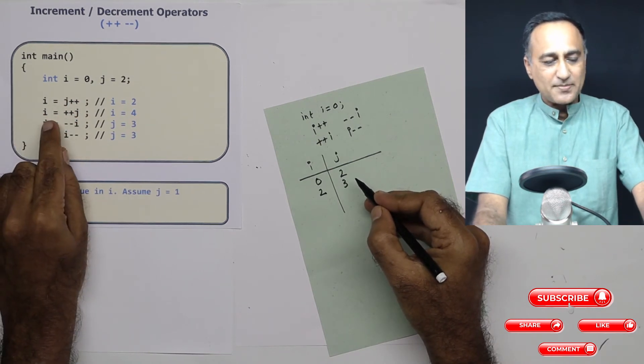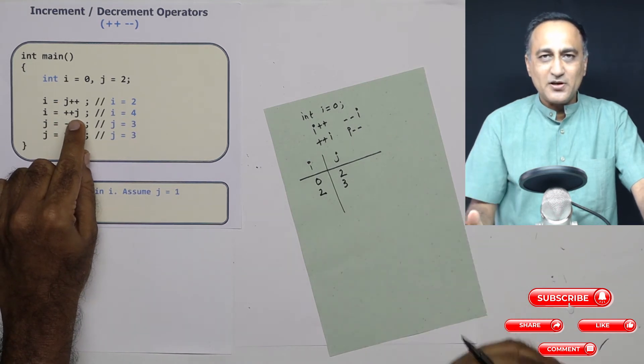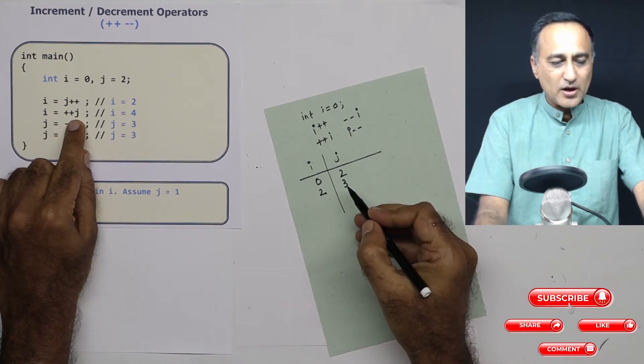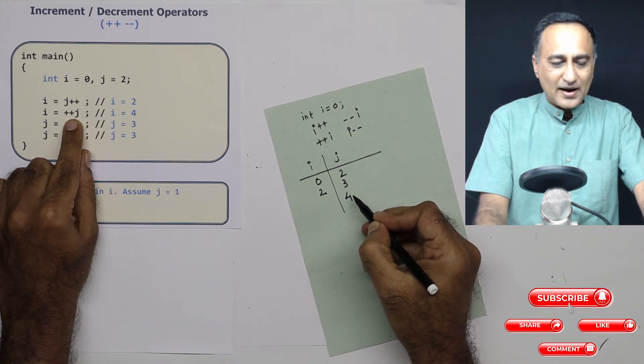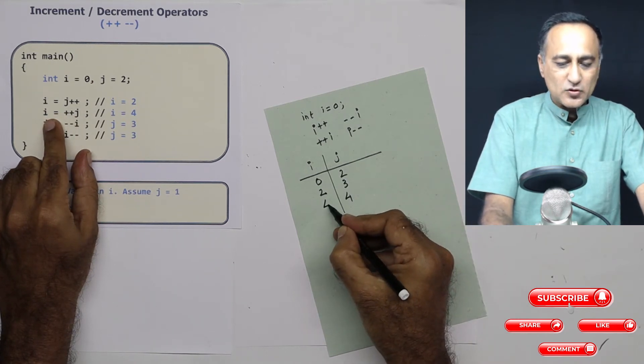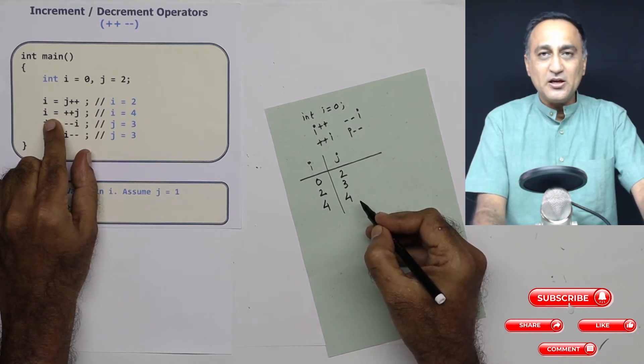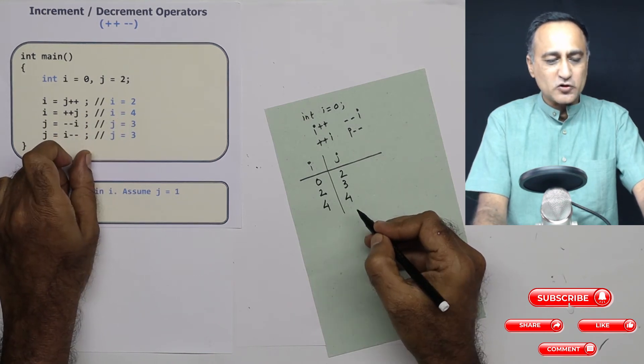Next step: i equals ++j. This is a prefix increment. First the value of j increases by 1, and then this new value of j is copied to i. So in this case, i also becomes 4. If you print i, it's 4, and j is also 4.